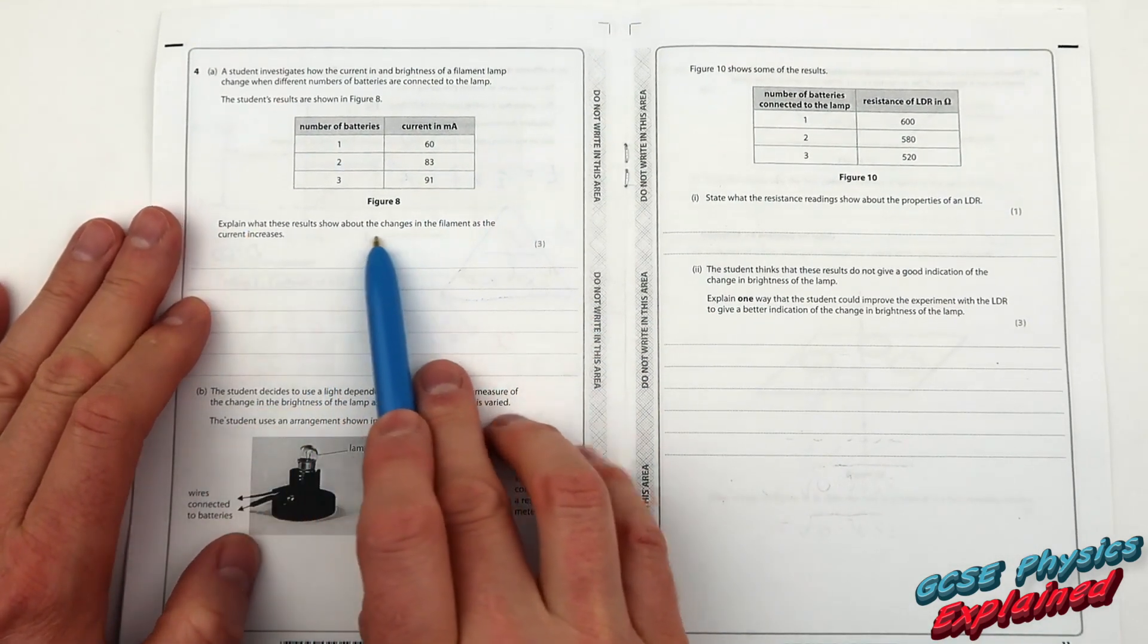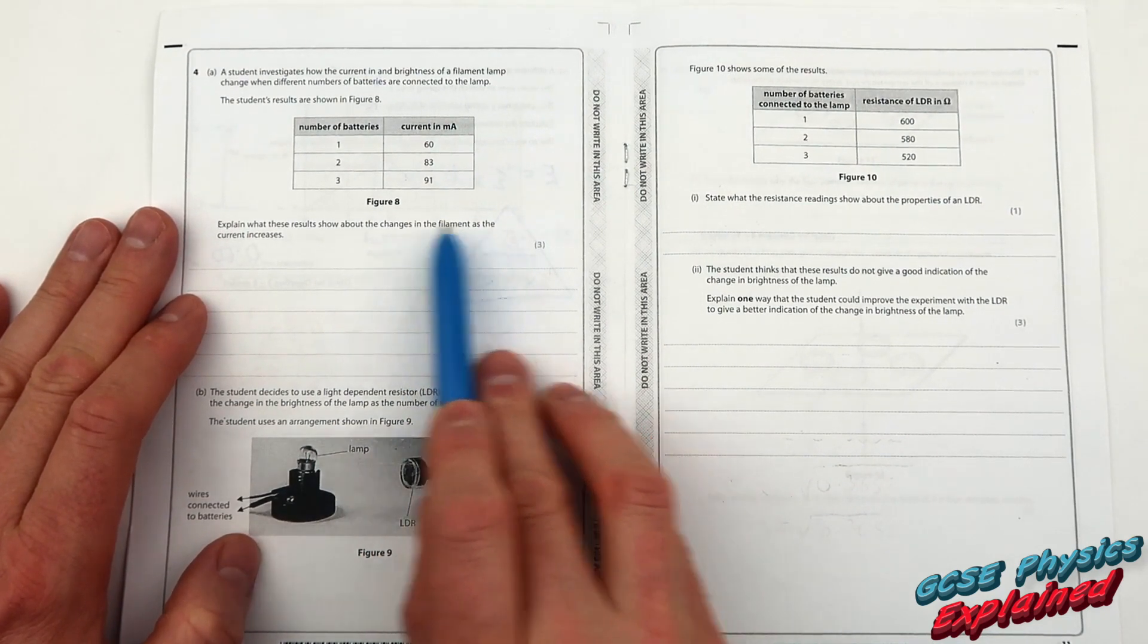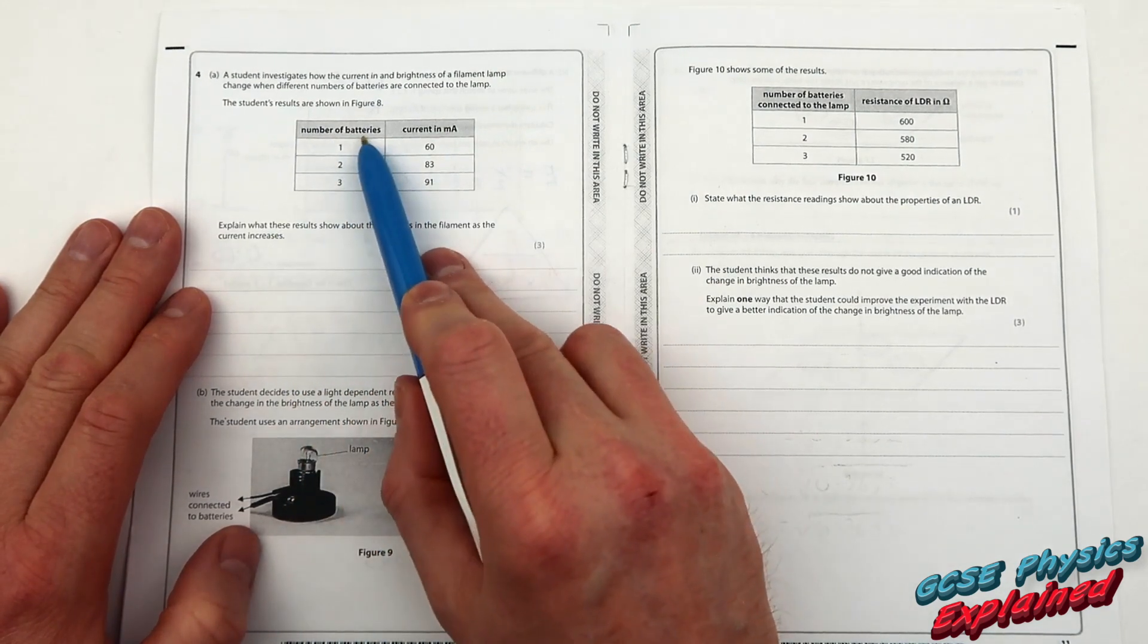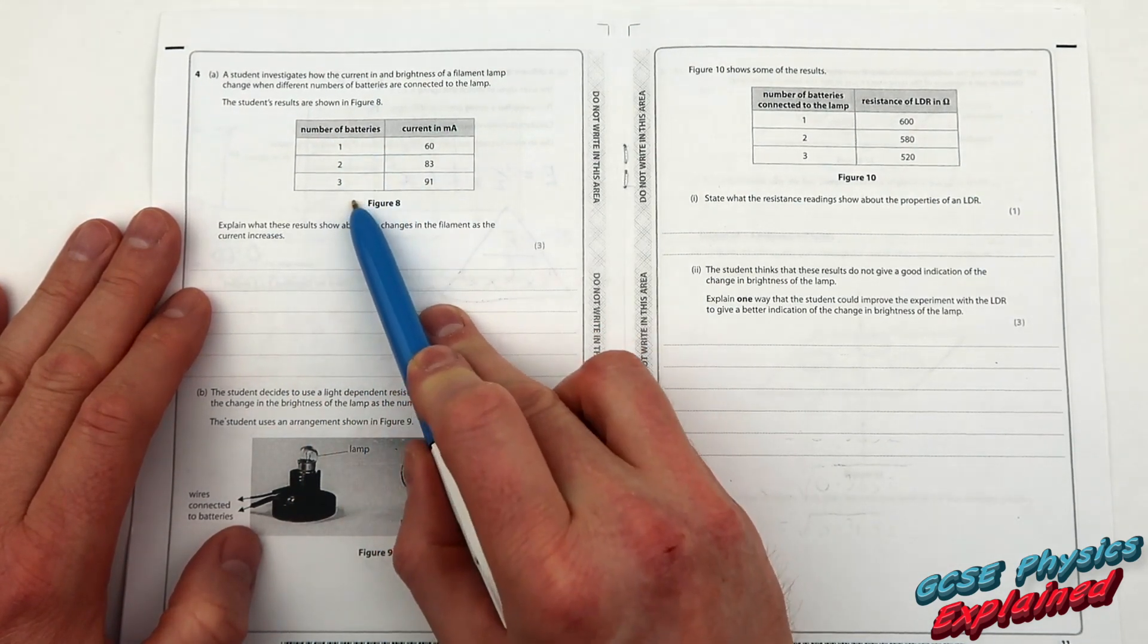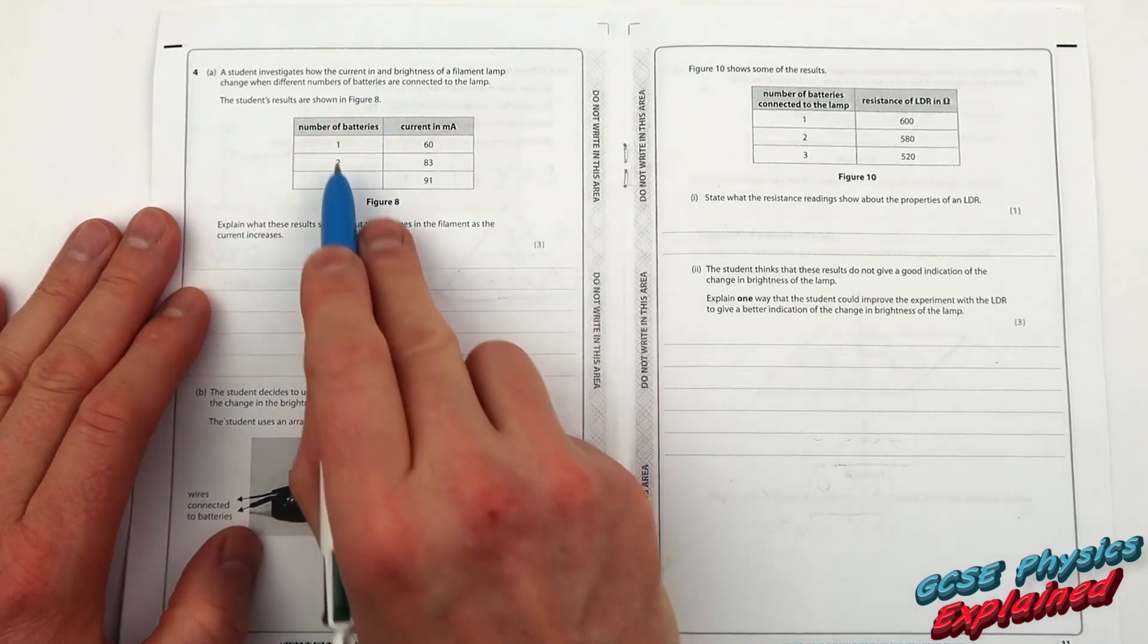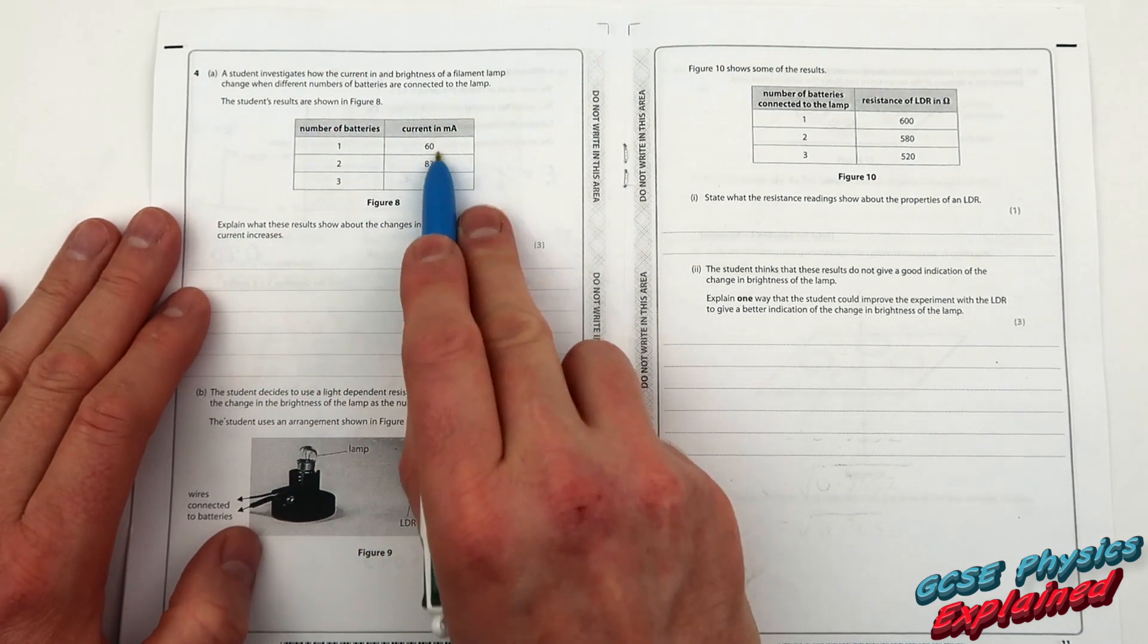Explain what these results show about the changes in the filament as the current increases. Now what we do know is that if you've got more batteries, you've got more voltage. So if you've got more batteries, we've got more voltage and we've got a bigger current.